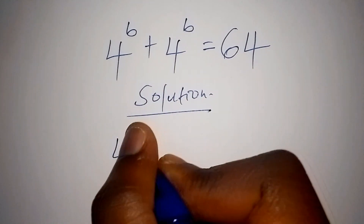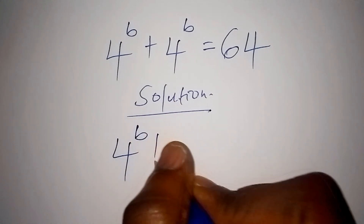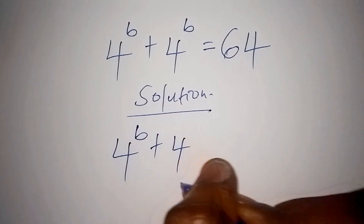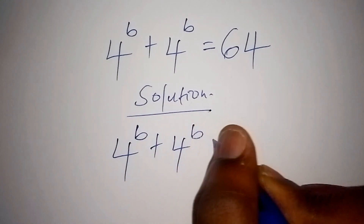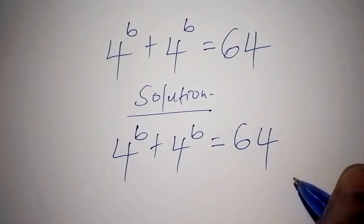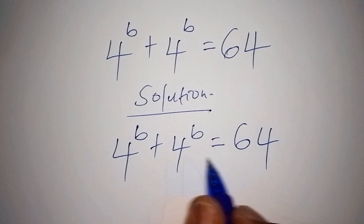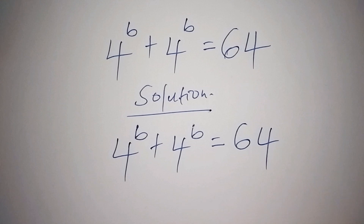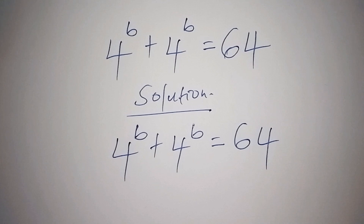We have 4 to the power of b plus again 4 to the power of b is equals to 64. We are asked to find the value of b. Pause this video and try working it out to the end, and come share your answers in the comment section.